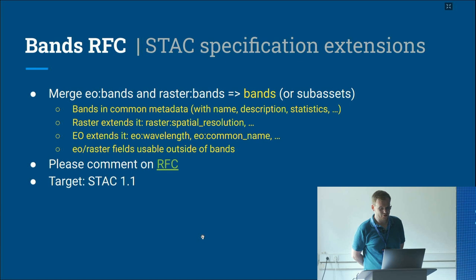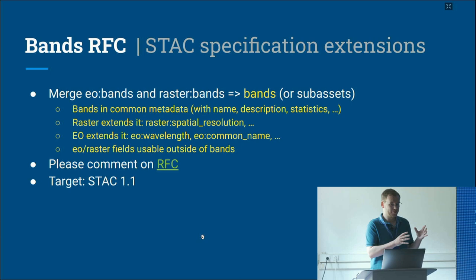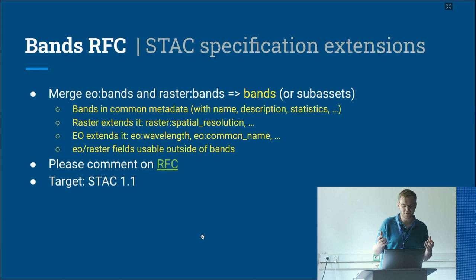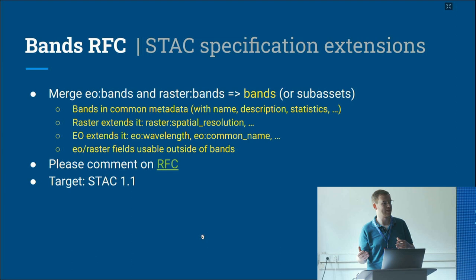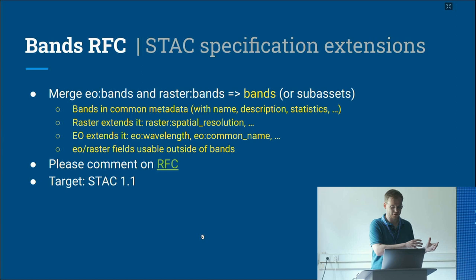Due to the history of STAC, we currently have two places where you can define bands: EO bands for spectral bands and raster bands for the layers in a file. These are very similar and have a lot of overlap. The plan for version 1.1 is to merge EO bands and raster bands into a single structure that raster and EO then extend — common fields like name, description, and statistics go into the core specification.